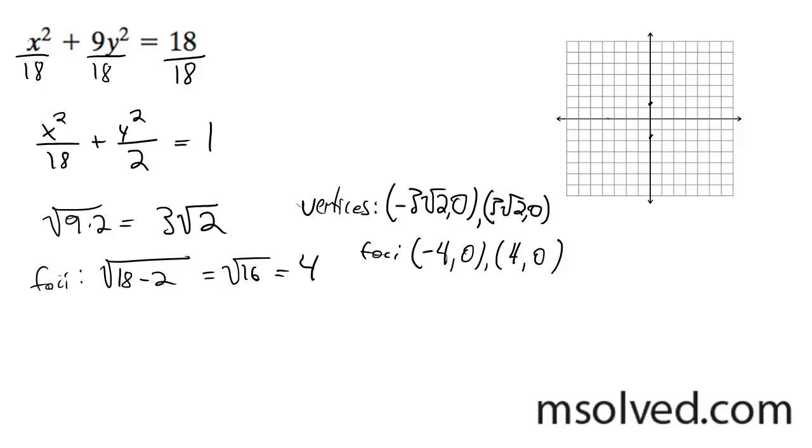And then 3 root 2, or negative 3 root 2, that's just slightly bigger than 4. So negative 3 root 2, and then positive 3 root 2.